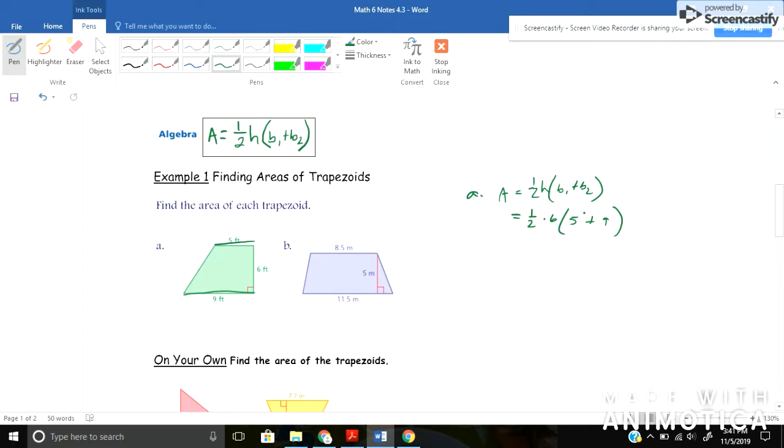Okay, well parentheses comes first so five plus nine would be 14. So a half times six, well half of six is three, and then three times 14 would give me a total of 42. And so this would be area equals 42 feet squared. Remember to include your label on these problems.